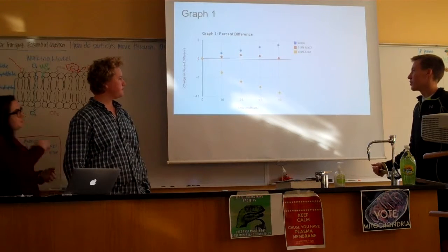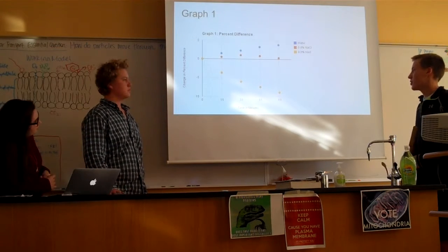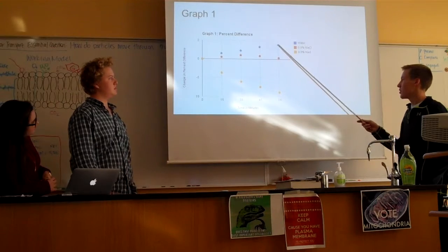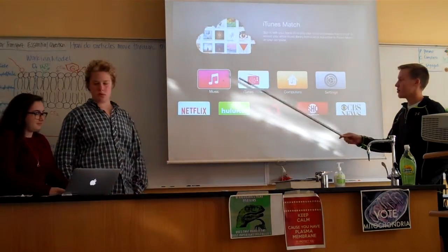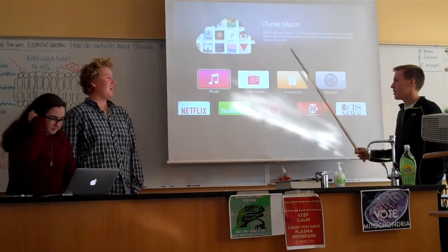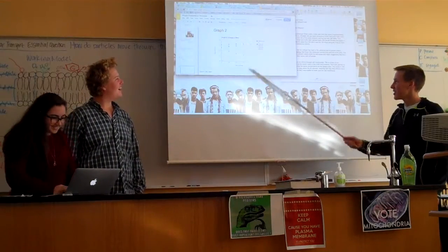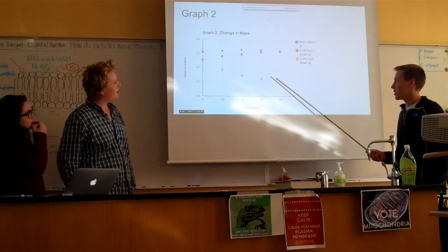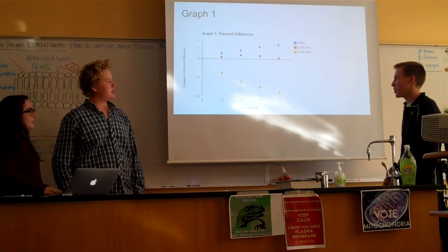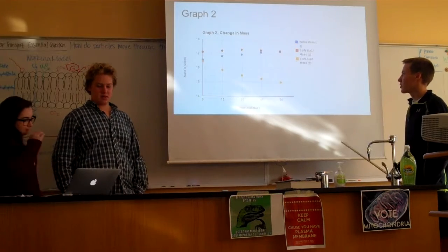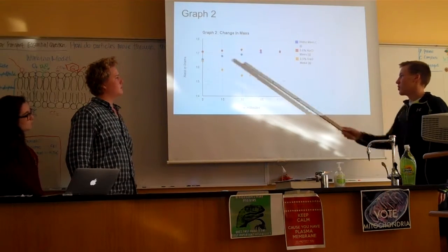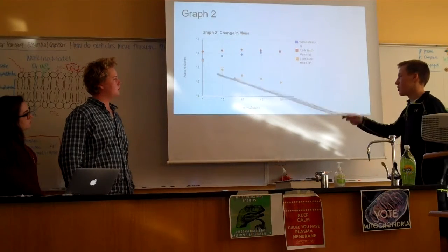This graph shows percent difference, basically showing the change in percent difference over time. The red one went up and kind of down at the end, and the yellow one slowly went from bottom up. The next graph shows the generic weight of them changing. This one gained weight then lost weight, this one steadily grew, and this one just kind of steadily decreased.